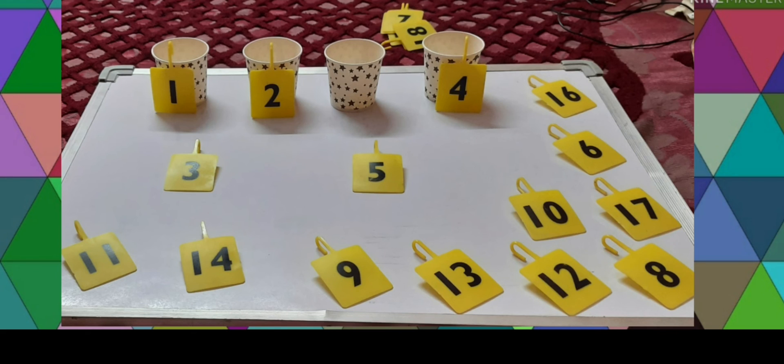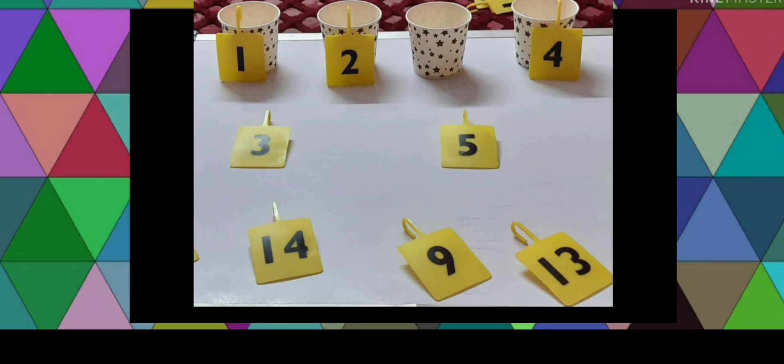For our next activity, what we need, we need four disposable cups and number cards. Now you can see on the screen four disposable cups are there and on three of the cups the numbers are written and one cup is without the number and the number cards are placed in front of that. The child is expected to pick out the correct number that will fill in the sequence. So the answer will be three here. So child is going to pick up number three and he is going to place number three in the blank space where the cup is not having any number. The idea here is to give different material in different situations so that child can do lot of practice.